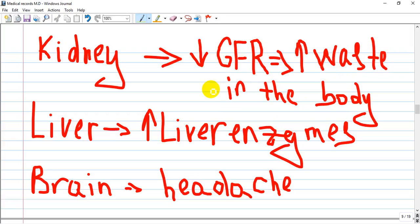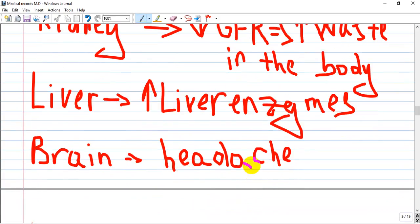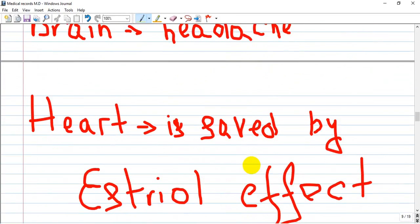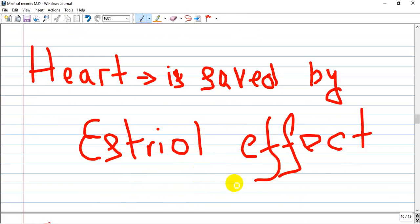The liver also suffers because of ischemia - liver enzymes like alanine and aspartate transferases will be increased. The brain also suffers from vasoconstriction and causes bad headache. The heart is saved. Why? Because of estriol, it has a saving effect.